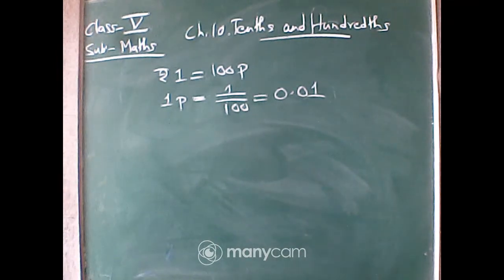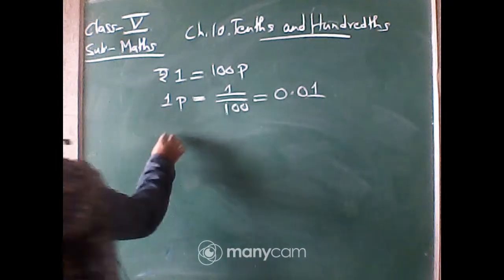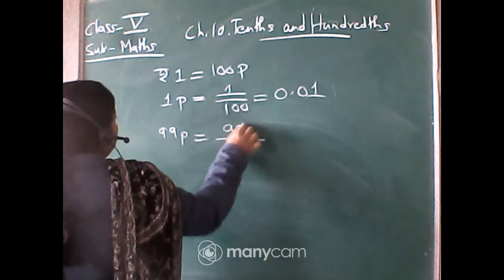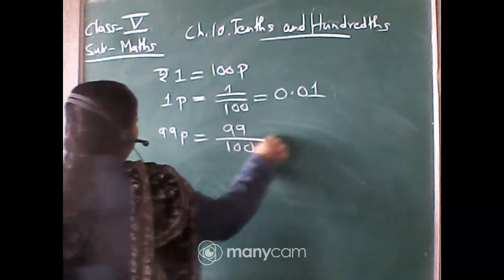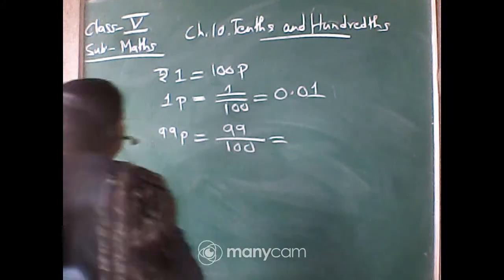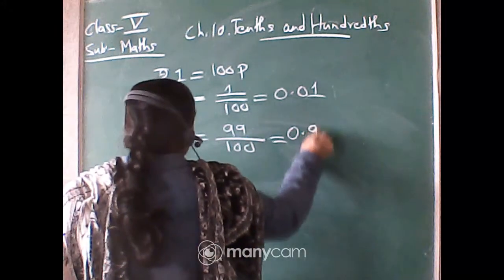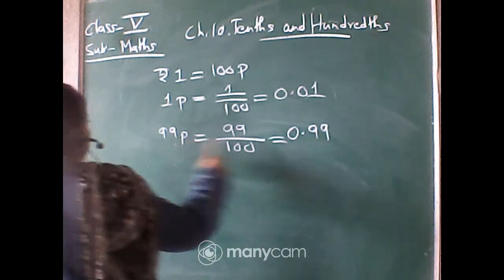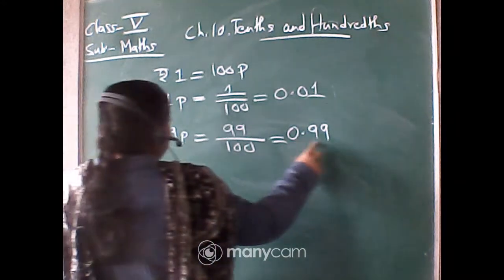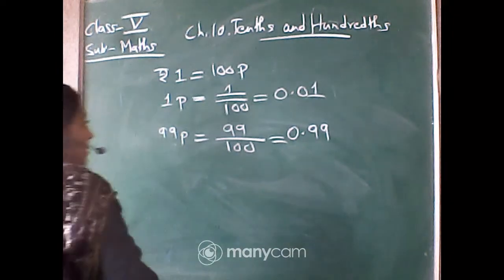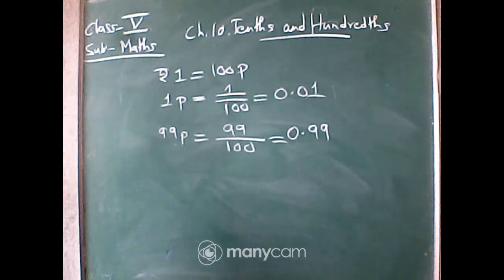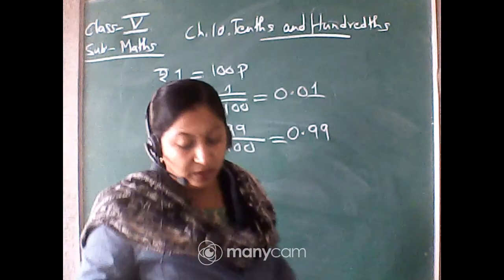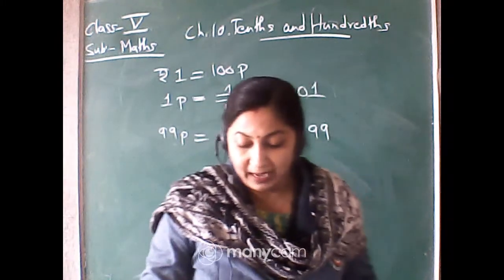Similarly, if it is 99 paise, for rupees it will be 99 by 100, that means 0.99 rupees. 99 paise is written as rupees 0.99. So this was about rupees and paise.